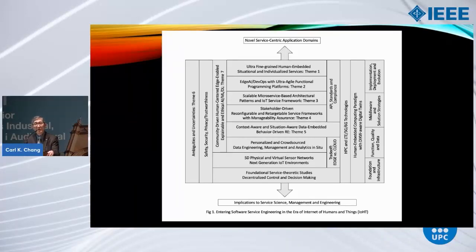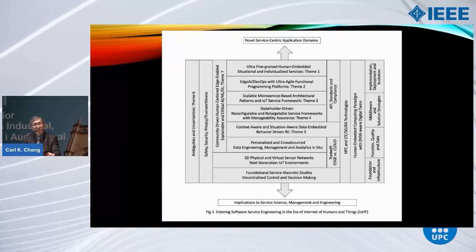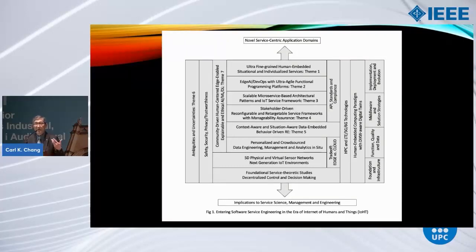I received an invitation just yesterday to help review SWEBOK version 4. If you are in the software engineering community, you know we have the software engineering standard body of knowledge — and I participated in the initial version. Looking at the draft quickly, they recognized we are facing new challenges such as uncertainties and ambiguities in sensor-laden IoT-based environments. But I started looking at the requirements area that I used to research heavily — it seems that even in this new version, they still think we have to talk to stakeholders and do elicitation, things as usual.